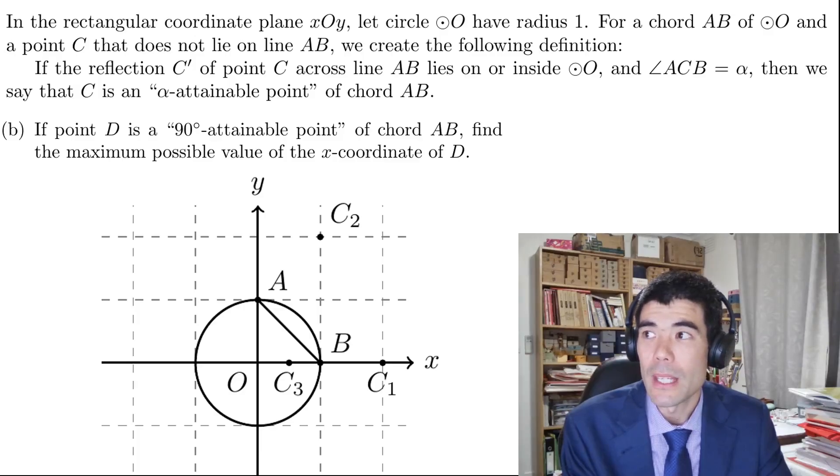Okay, so here's part 1b. If D is a 90 degree attainable point of chord AB, find the maximum possible value of the x coordinate of D.